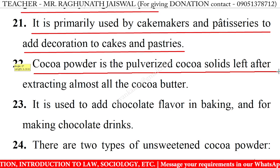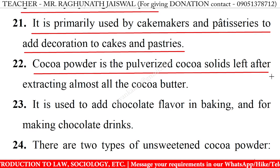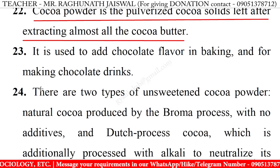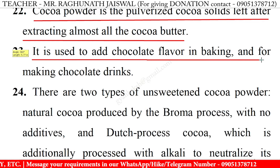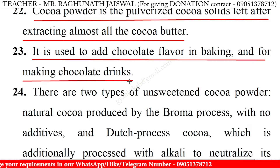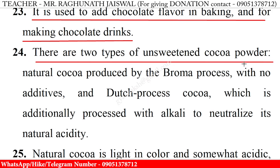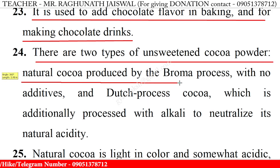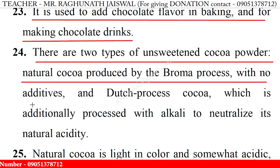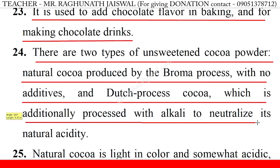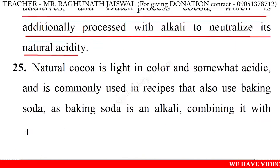Cocoa powder is the pulverized cocoa solids left after extracting almost all the cocoa butter. It is used to add chocolate flavor in baking and for making chocolate drinks. There are two types of unsweetened cocoa powder: natural cocoa produced by the Broma process with no additives, and Dutch process cocoa which is additionally processed with alkali to neutralize its natural acidity.